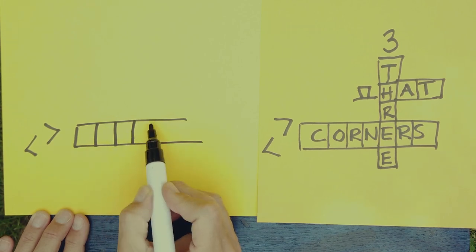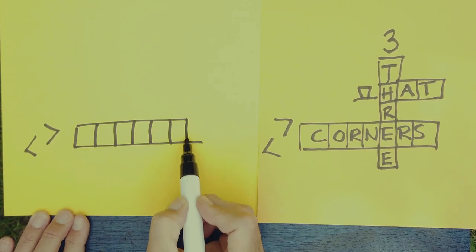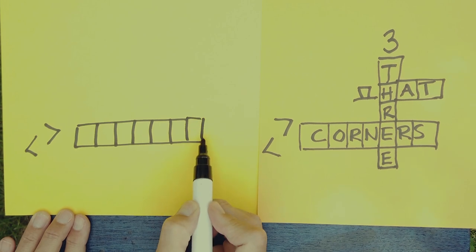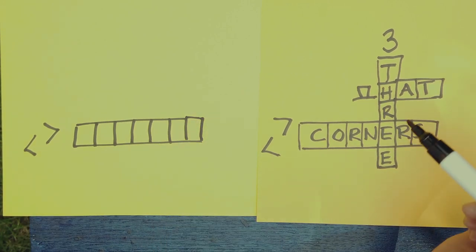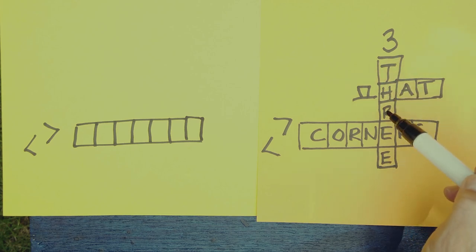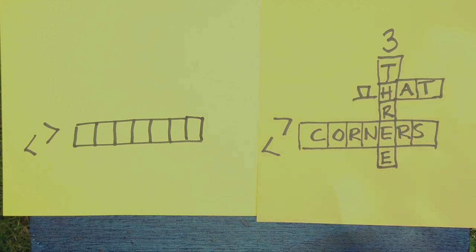One, two, three, four, five, six, seven boxes. The word three has got one, two, three, four, five letters.